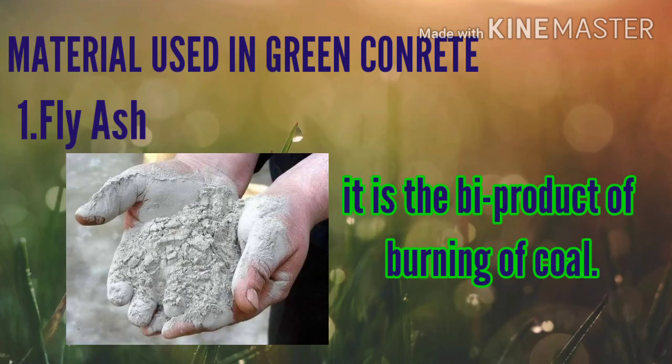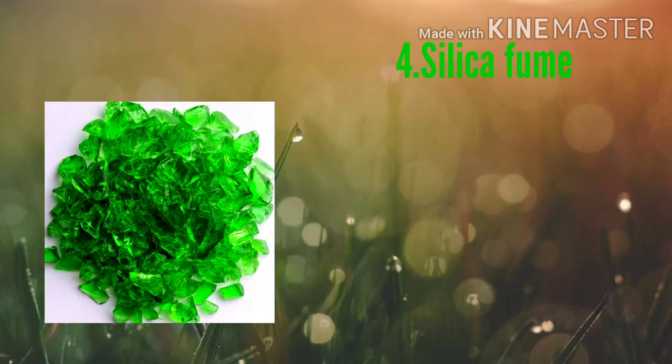What are the materials used in production of green concrete? The first one is fly ash. It is a byproduct of burning of coal. It is used in green concrete as a replacement for cement. As we know, in the production of cement there is a lot of CO2 emitted, and by replacing cement with fly ash, the emission of CO2 is reduced by 30%.